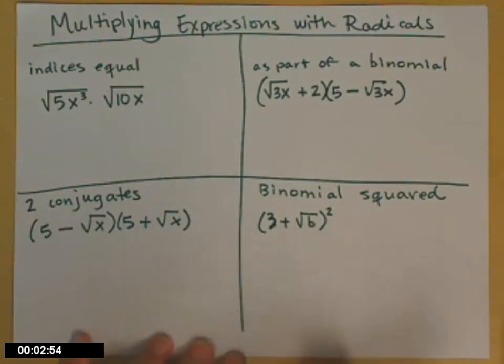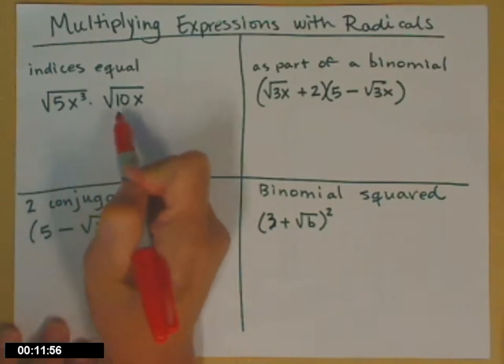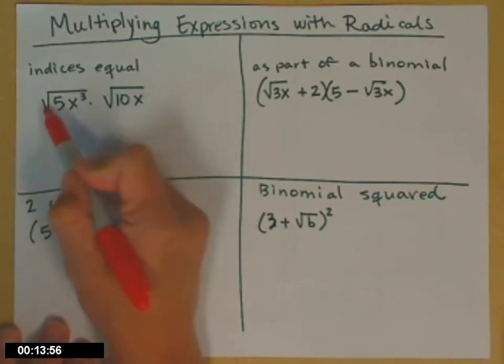Here are four representative questions involving multiplying expressions that have radicals in them. So the first one is a review of something we've already done. Multiplying two monomials if they have equal indices.